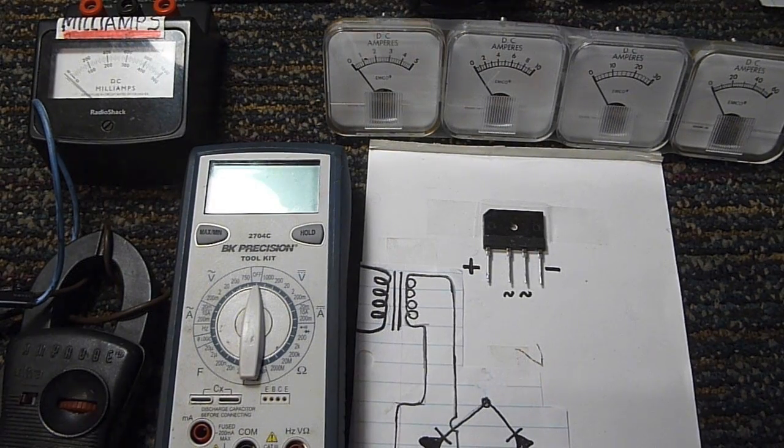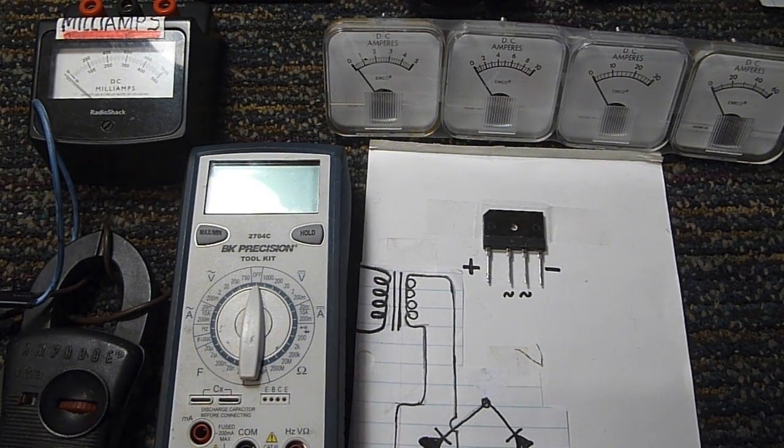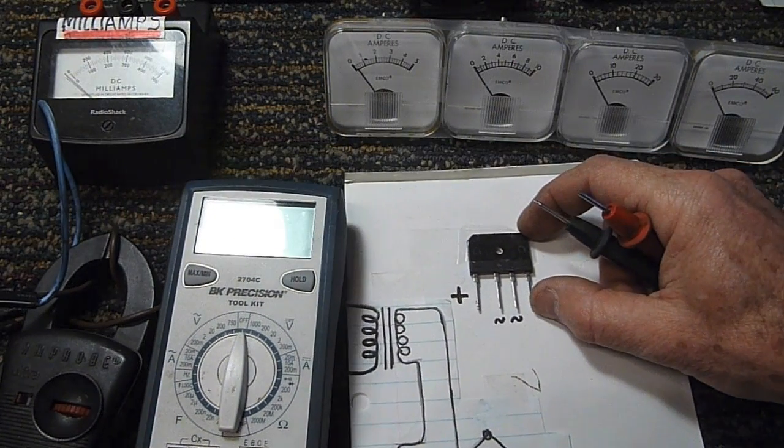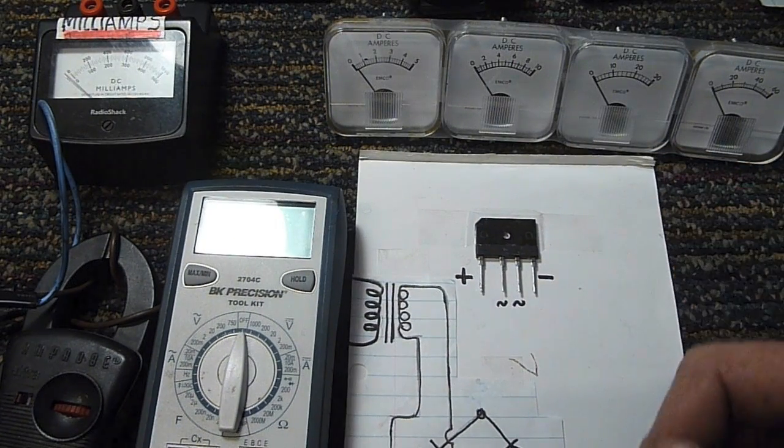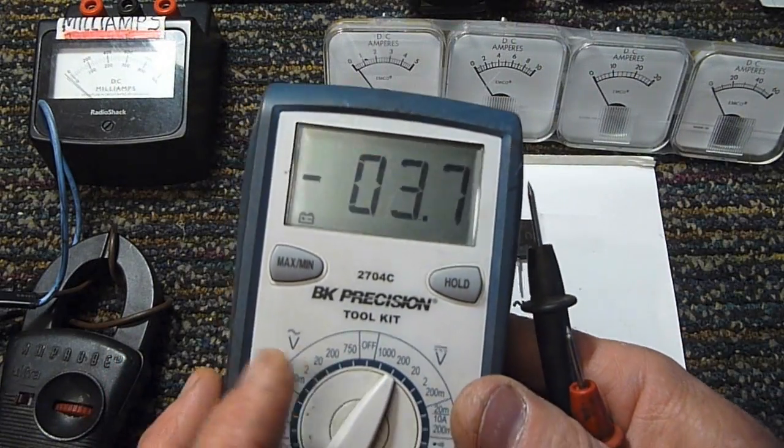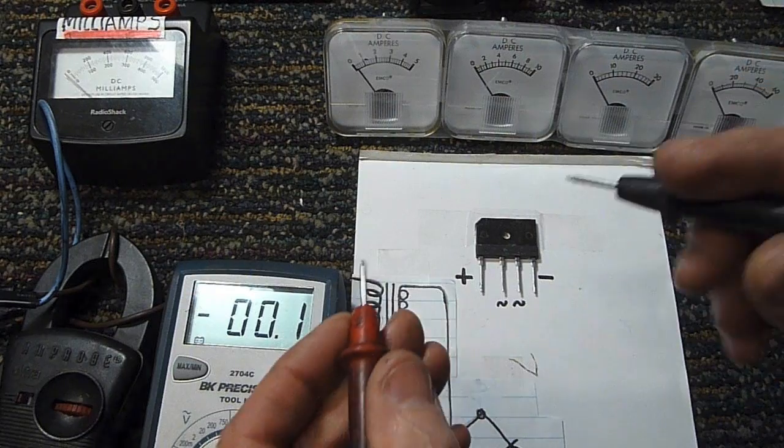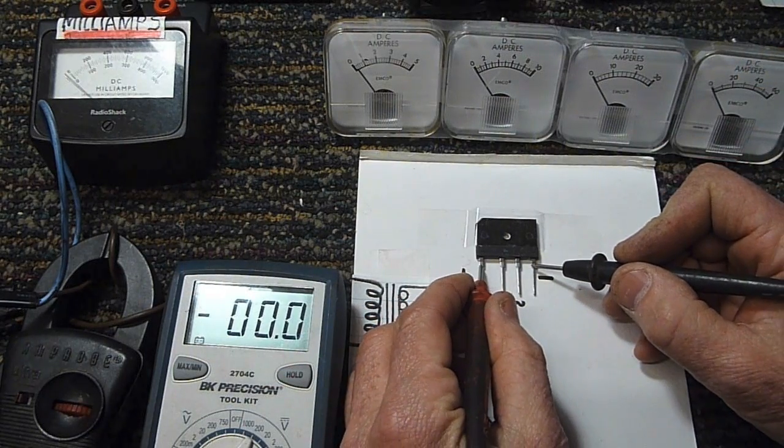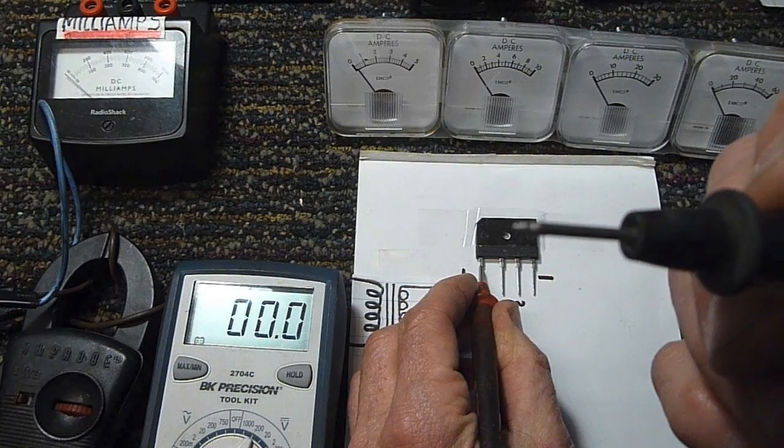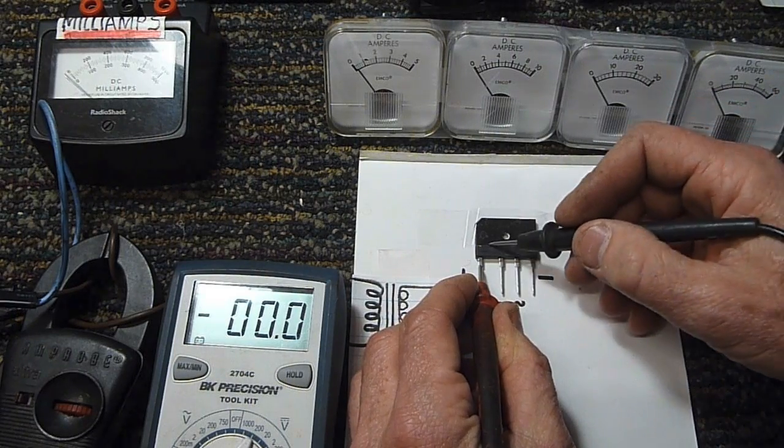A couple of years ago a beginning electronics student contacted me and he wanted to know why the bridge rectifier in his power supply blew up when he was testing the voltage on it. All he had done is taken out his multimeter, put it on the voltage select, and he took the meter probes, put them across the bridge and bang, saw a bright flash, probably arc welded the tip of one of his probes, and undoubtedly ruined the bridge rectifier.